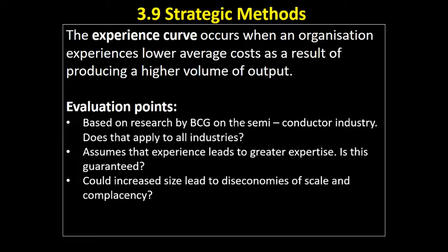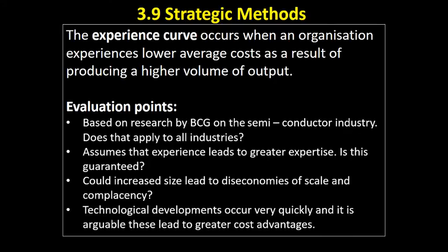We're also ignoring the possible impact of diseconomies of scale — the more output produced, the more we might experience diseconomies. There's also the potential for complacency, particularly if a business holds a large market share or is a monopoly, which could actually lead to higher average costs. Finally, technological developments occur very quickly and may deliver greater cost advantages. It's all very well having experience with an old method of production, but if a new machine can produce four times as many units as an experienced worker, the value of that experience is questionable.